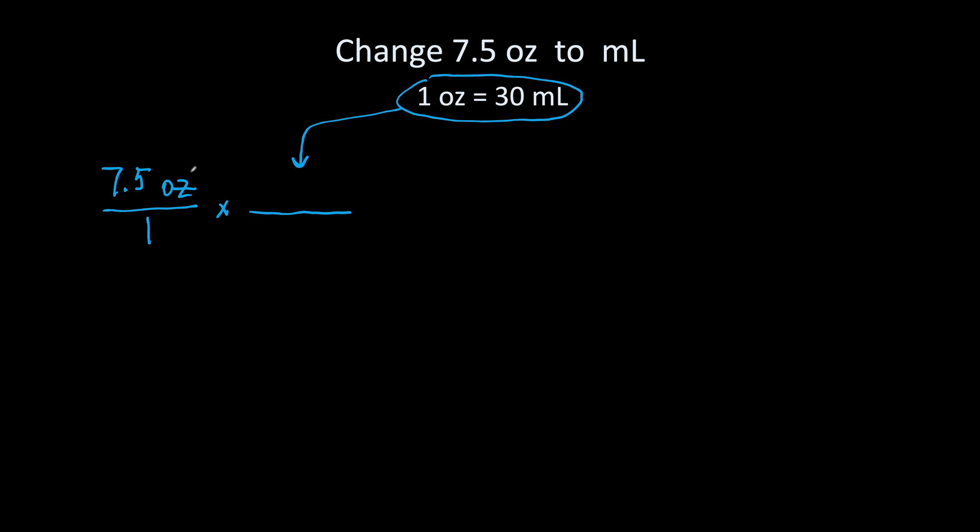We have ounces on top in the numerator. So you will put 1 ounce on the bottom in the denominator and 30 milliliters on top in the numerator. Look here. Your ounces cancel out and you are left with milliliters.